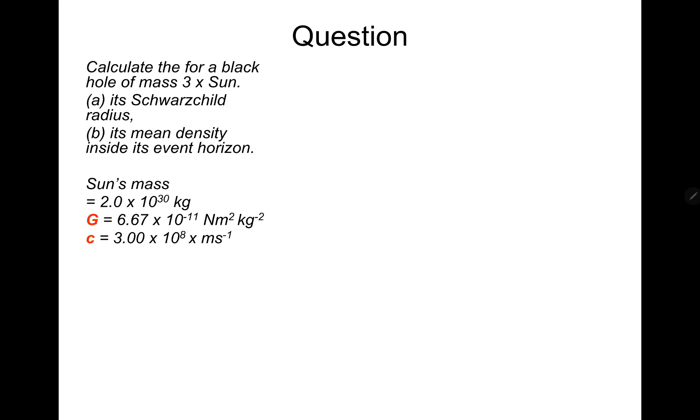So calculate for a black hole of mass 3 times the sun, its Schwarzschild radius and its mean density inside its event horizon.